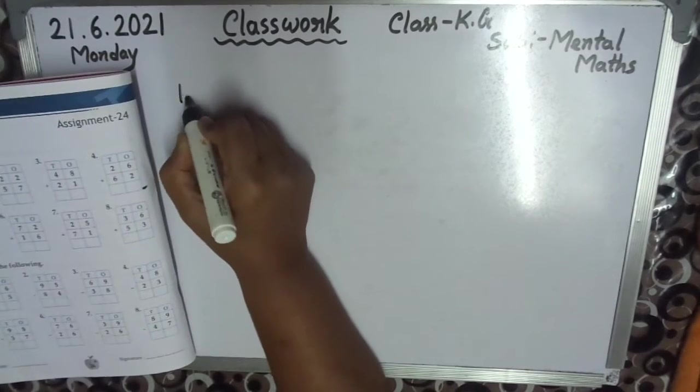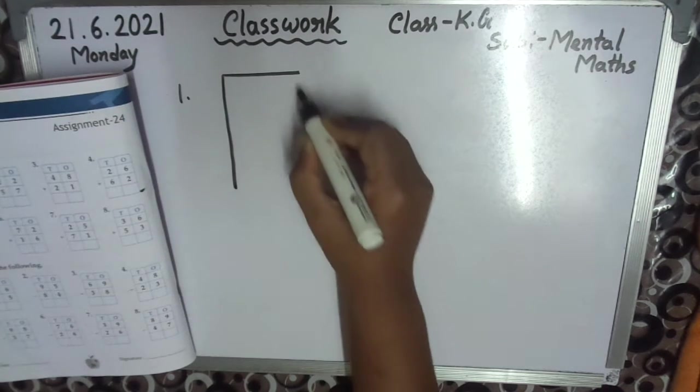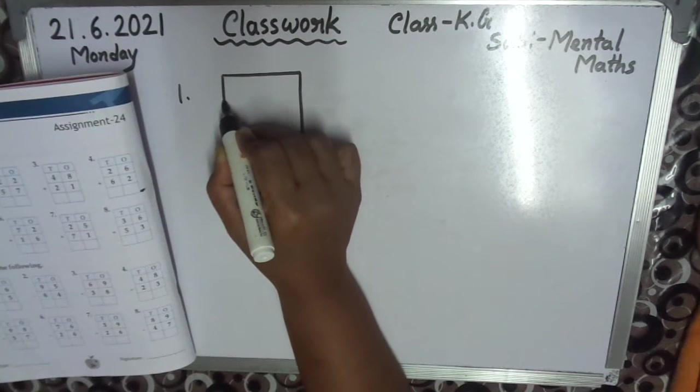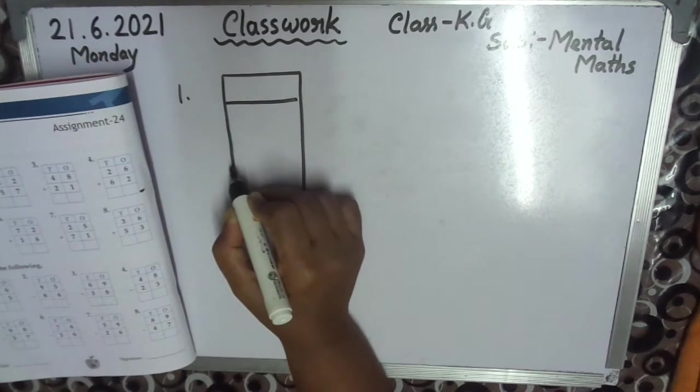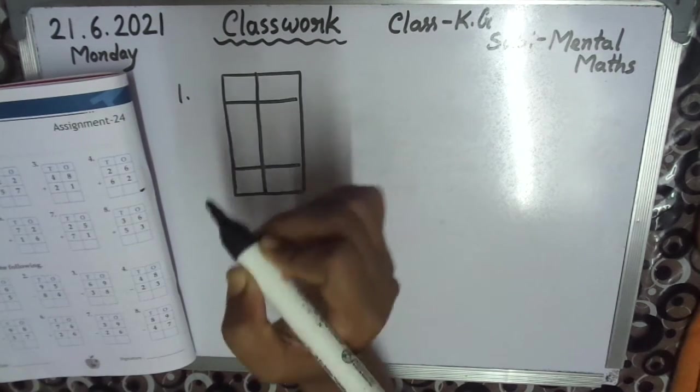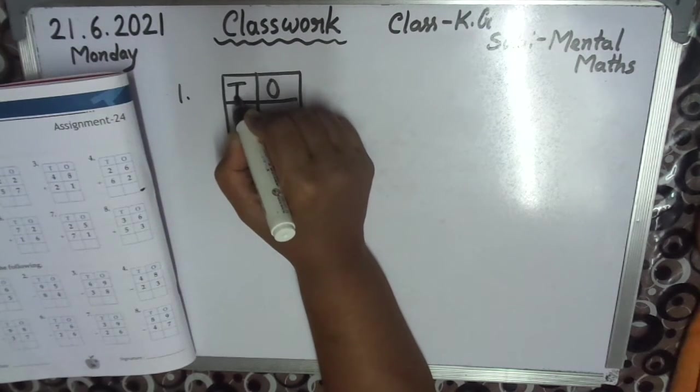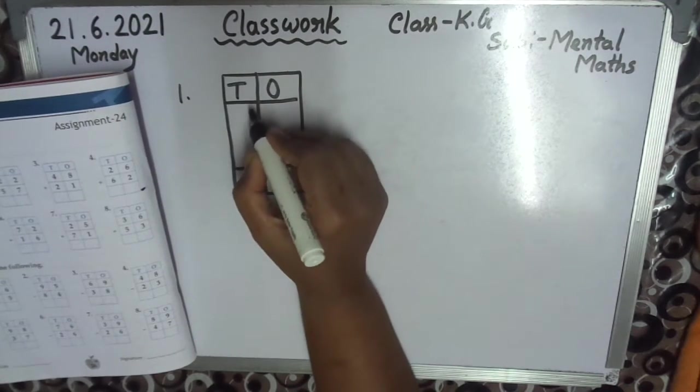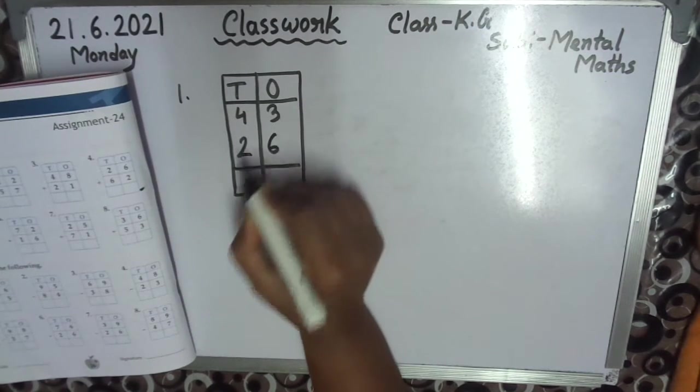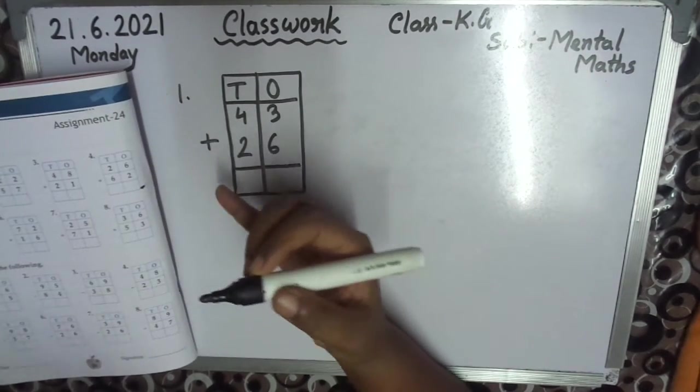Number 1. You know tens and ones, it's very important. Tens and ones. T for tens. So question is 43+26. Addition means plus sign, you see.